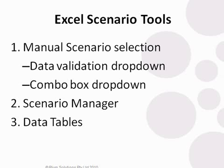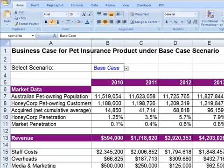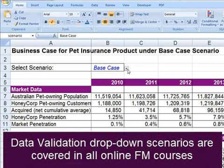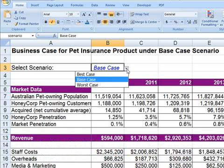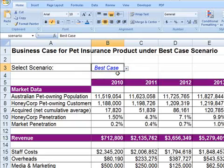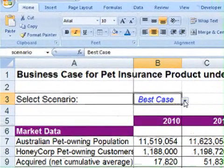The first is probably the simplest and most commonly used form of scenario analysis, and that is a manual drop-down selection. You've got your basic drop-down here — it's a data validation type of drop-down. You've got your base case, best case, and worst case. You change the case and all the numbers will change as a result.